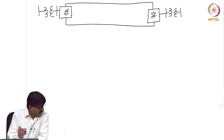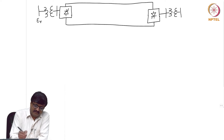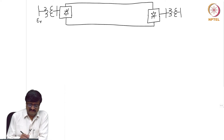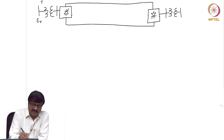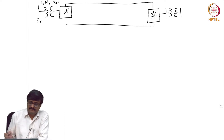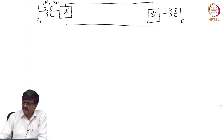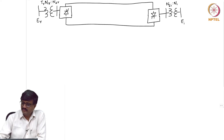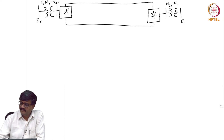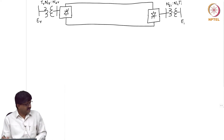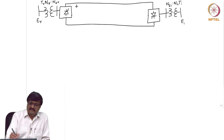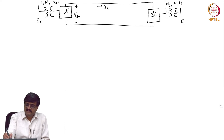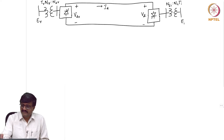What is the schematic diagram of the system? I have the RMS value of line-to-line voltage of the AC bus on the rectifier side as E_R, and the turns ratio including the off-nominal tap T_R as N1_R to N2_R. The RMS value of line-to-line voltage on the AC system bus on the inverter side is E_I, with ratio N2_I to N1_I divided by T_I. The voltage at the DC bus on the rectifier side is V_DR, the current is I_D, and the voltage at the DC bus on the inverter side is V_DI.